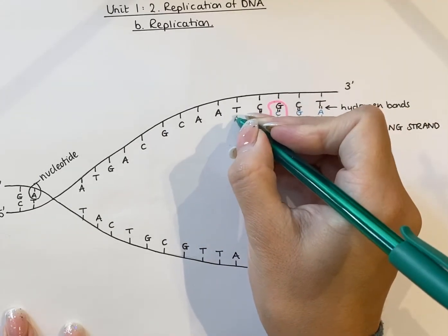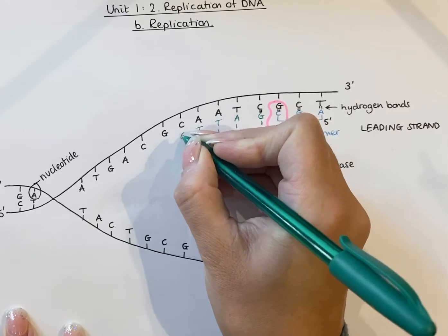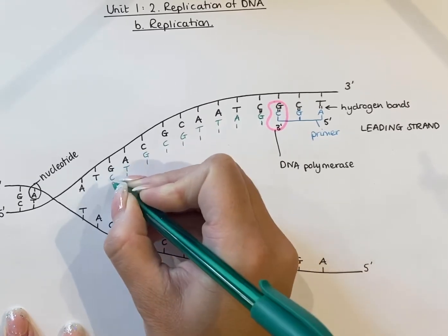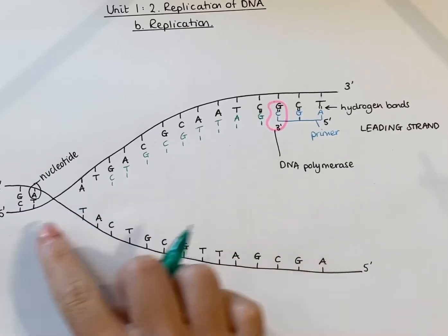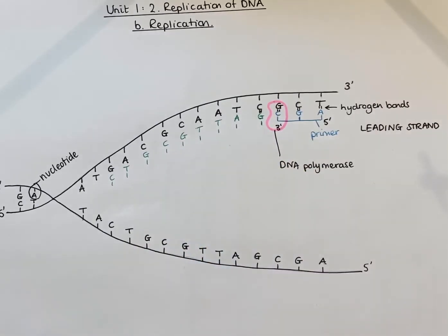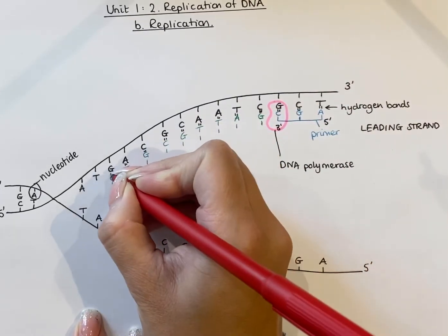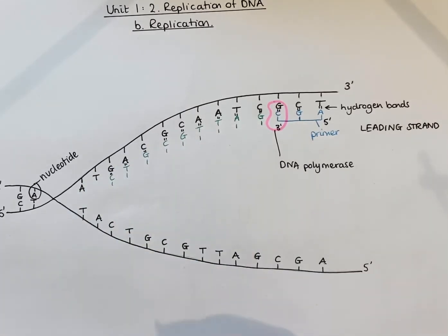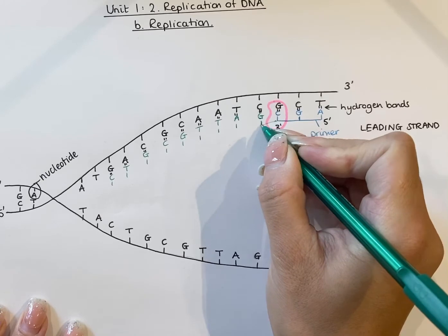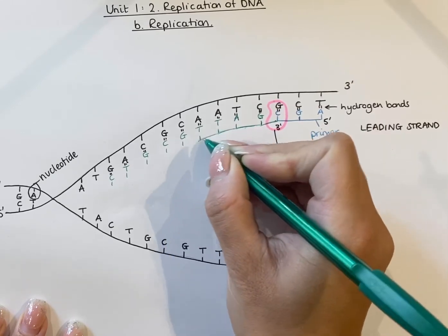The same thing occurs all the way along this strand — each base pairs and brings its own nucleotide in, all joined with hydrogen bonds. Now, these nucleotides are just bonded by hydrogen bonds at this point, but they are not yet a DNA strand. To form a DNA strand, we have to create a sugar phosphate backbone. That sugar phosphate backbone is formed using sugar phosphate bonds, bonding one nucleotide to the next — a sugar to a phosphate, another sugar to another phosphate — all the way along, forming this continuous backbone.